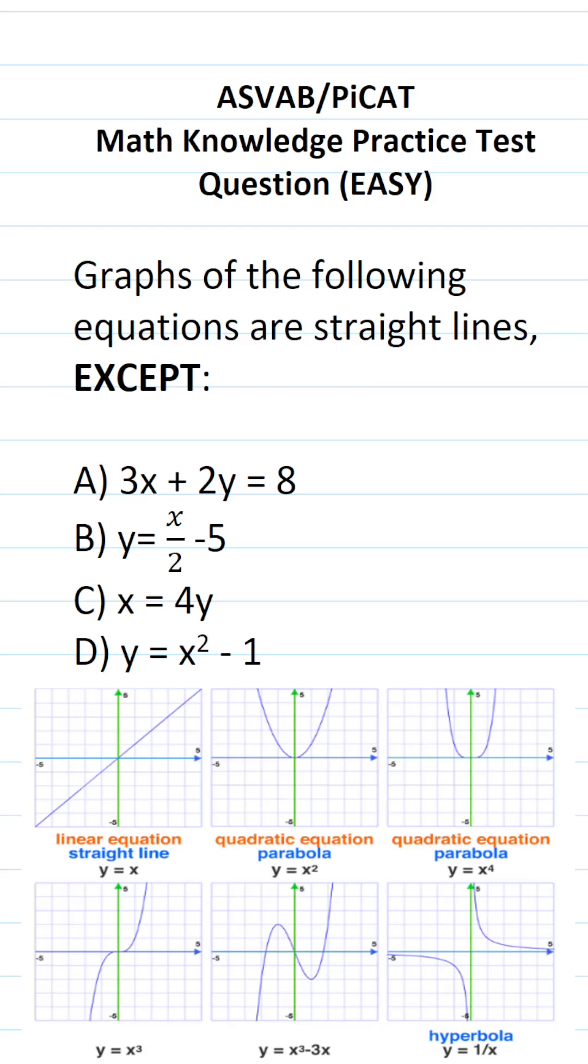In order to answer this one, we have to look at these equations and determine which of them is not a straight line. The easiest way to do that, in my opinion, is to pay very close attention to the x variable, because when the x variable is raised to some power other than one, it's not going to be a straight line.